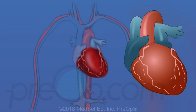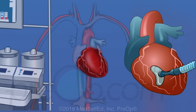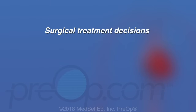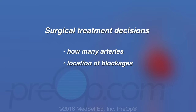During an off-pump procedure, the heart is not stopped. Instead, special tools steady areas of the heart while the surgeon stitches grafts into place. The pads and arms of the tool brace the moving heart muscle to hold small sections still. A heart-lung machine is kept on standby during off-pump surgery. The pump can be necessary to help manage some situations during surgery. Individual surgical treatment decisions depend on many factors, including the experience of the surgeon, how many arteries are involved, the location of the blockages, and their severity.